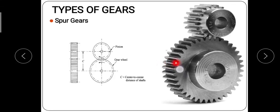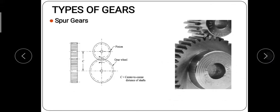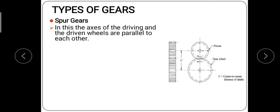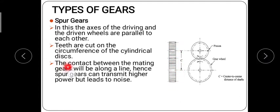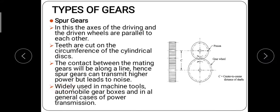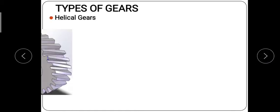In a spur gear, the teeth are parallel to the shaft and are cut on the circumference of a cylindrical disc. The contact between mating gears is along a line, so spur gears can transmit higher power but produce noise. They are widely used in machine tools, automobile gearboxes, and most general cases of power transmission.